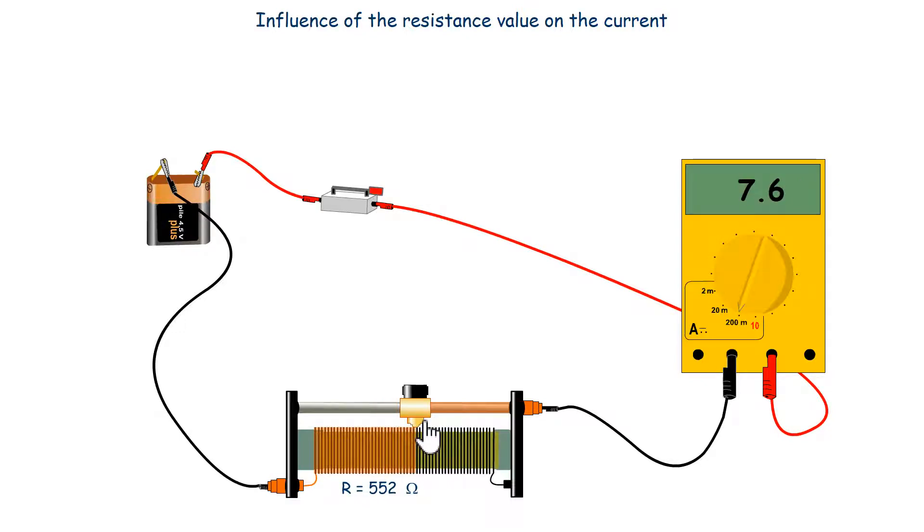What I wanted to show you is that the more the resistance increases, the more the intensity decreases. Here, we have an intensity in milliamps since the range is in milliamps. So if the resistance is very high, we will have a very low intensity.